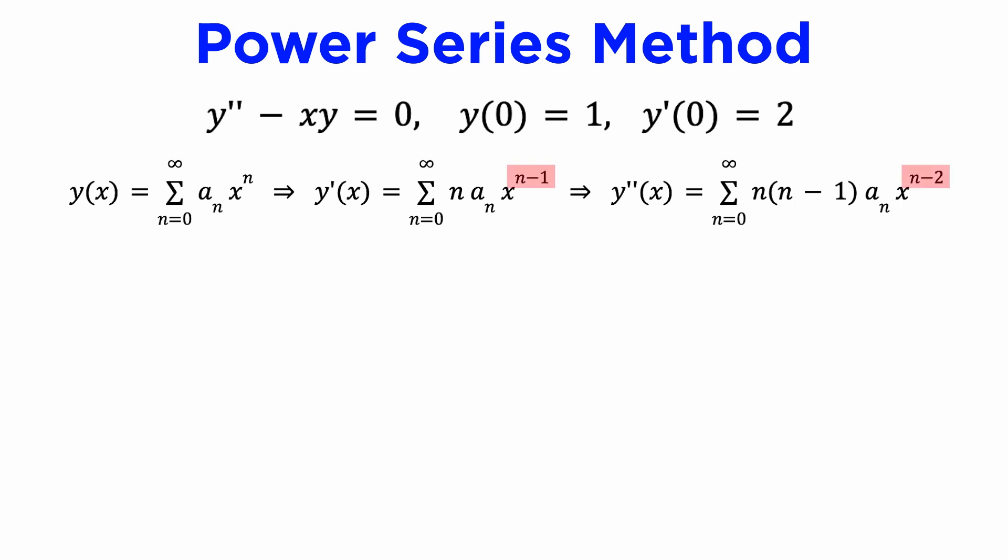Notice that although the series for these derivatives now appear to include terms with negative powers of x, these terms always evaluate to zero because the factor n will be zero in the front, and some sources will start these summations at a higher index to avoid this confusion. Either way, we can substitute into our differential equation. We first need to absorb the terms outside the summation into our x to the n terms, which we can do in the second term here, increasing the power by one.